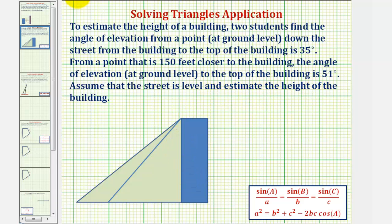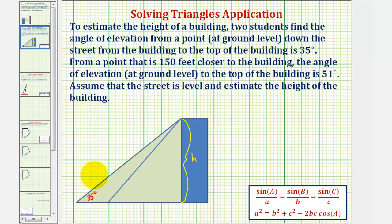This blue rectangle represents the building, and our goal is to find the length of this side here. From the furthest point, the angle of elevation is 35 degrees. From a point 150 feet closer, the angle of elevation is 51 degrees.